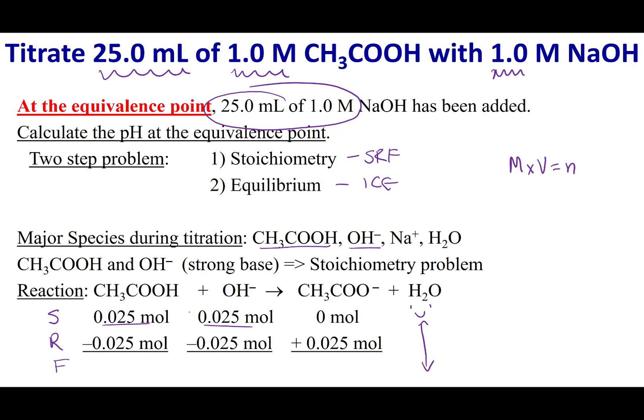After my reaction takes place, I can calculate F, my final amounts. I'm going to chew up both of these two things, because they're both limiting reagents, and I'm going to have acetate left over. Now, this completes my stoichiometry problem.